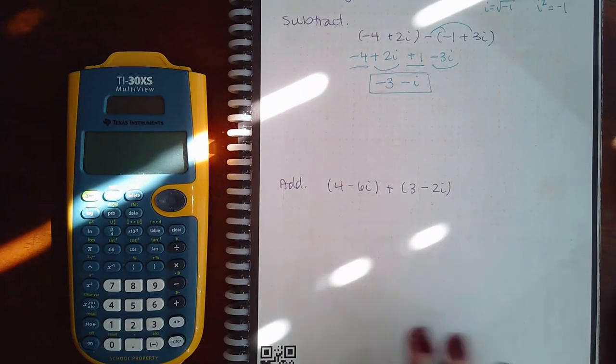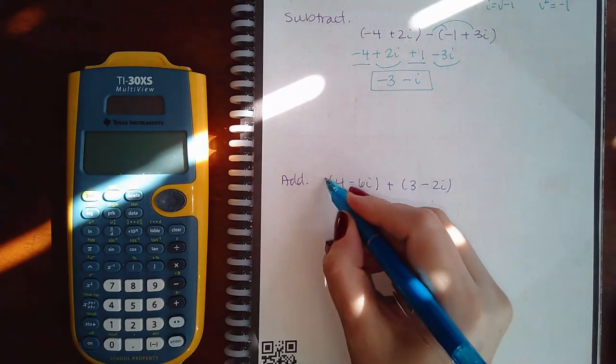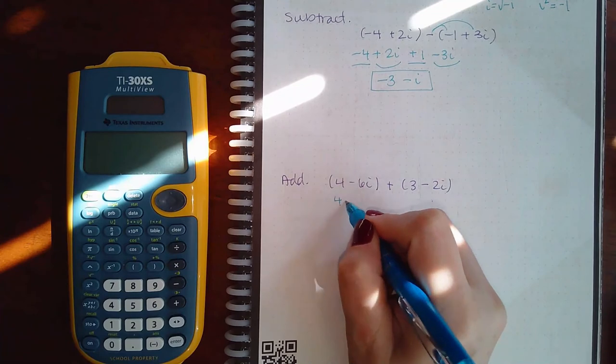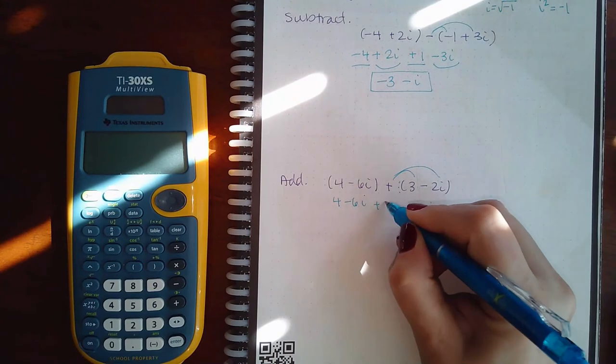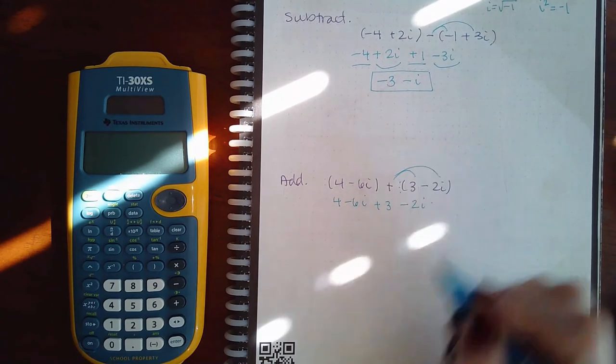Same thing for the other one where they want to add. There's nothing to distribute there, so we get 4 minus 6i. If you distribute a positive 1 here, it stays positive 1 and negative 2i.